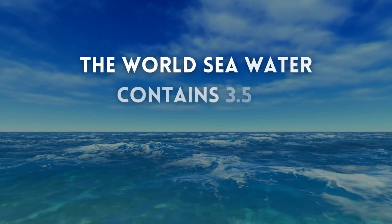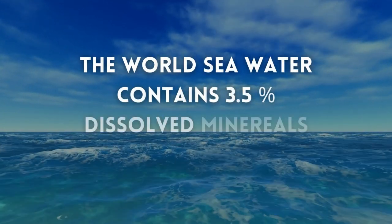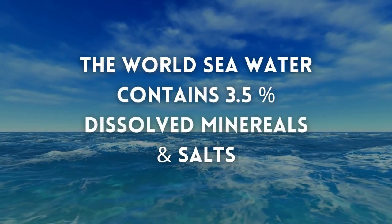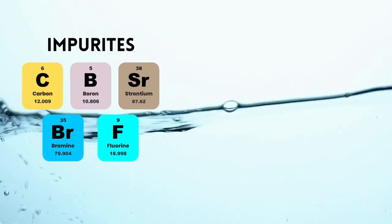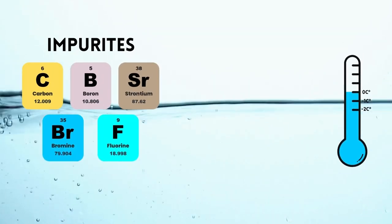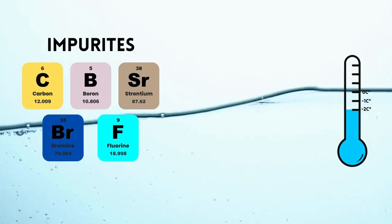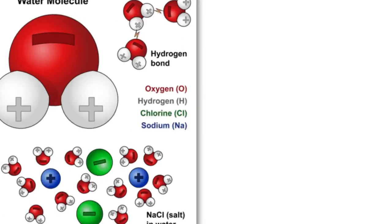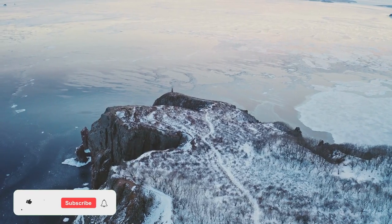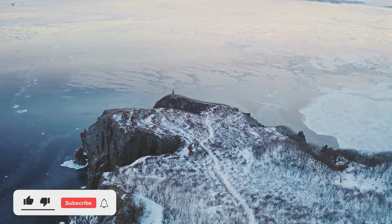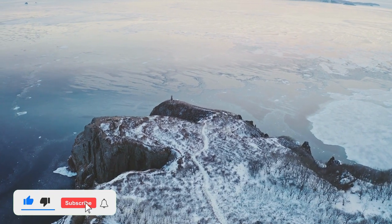Seawater, on the other hand, contains around 3.5% dissolved minerals and salts. This additional material lowers the freezing point of seawater to around minus 2 degrees Celsius, because the freezing point depends on the number of molecules present in a solution, as well as the type of molecules.